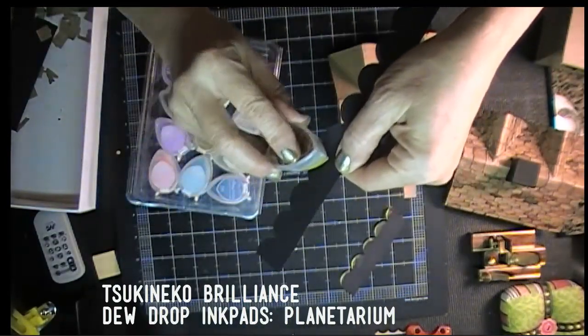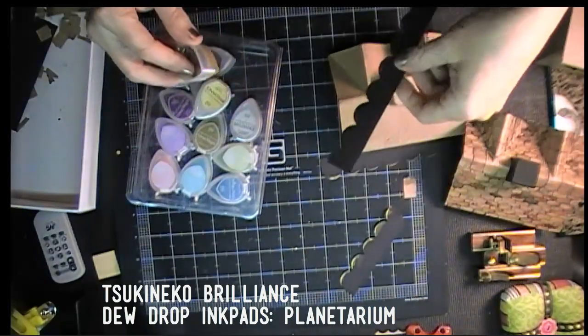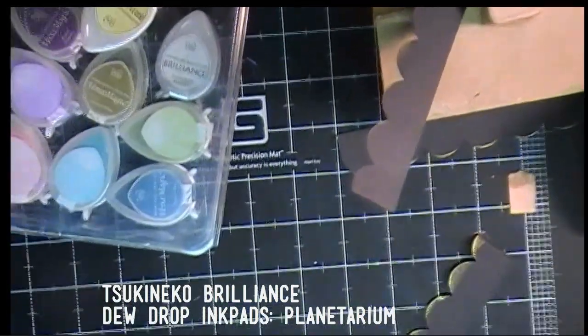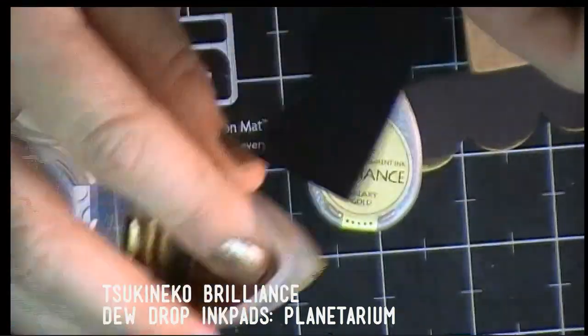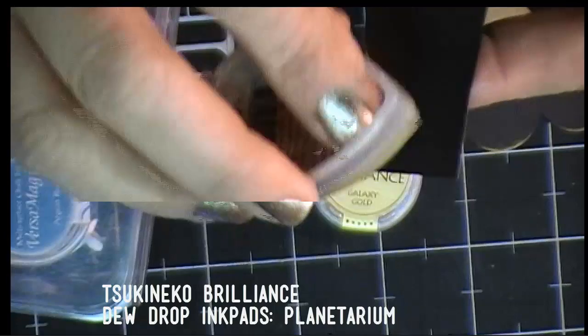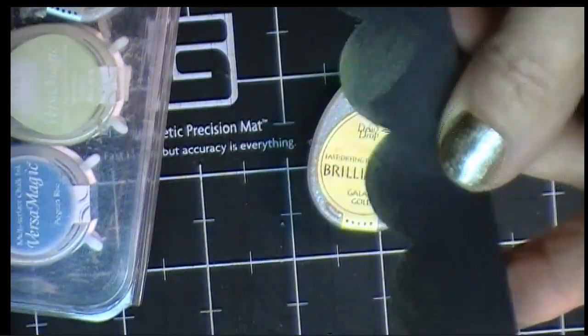What I'm using here is some Dewdrop Metallic, I think it's called Metallic Brilliance. They're these little Dewdrop shapes and they're not very expensive. I think I paid maybe less than $10 for a little set of six of them. They're small and don't take up much space and inexpensive for a lot of colors.